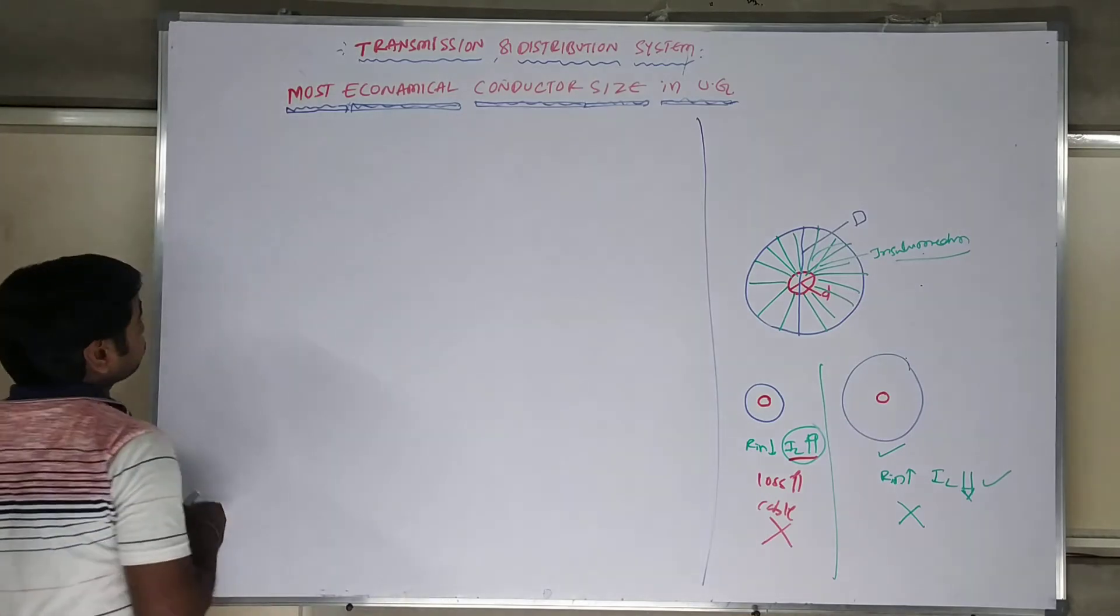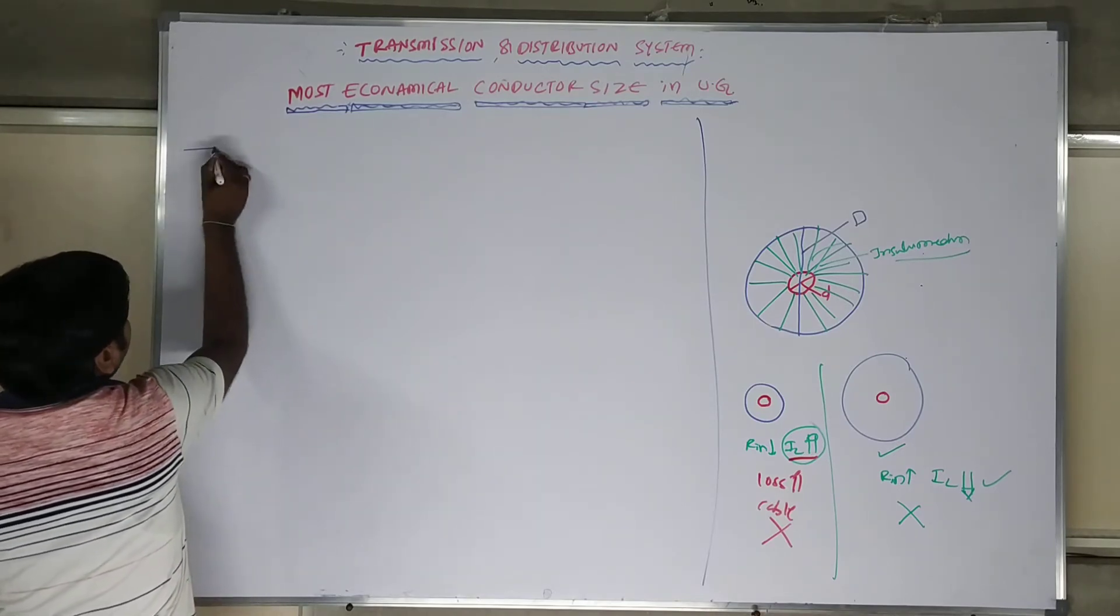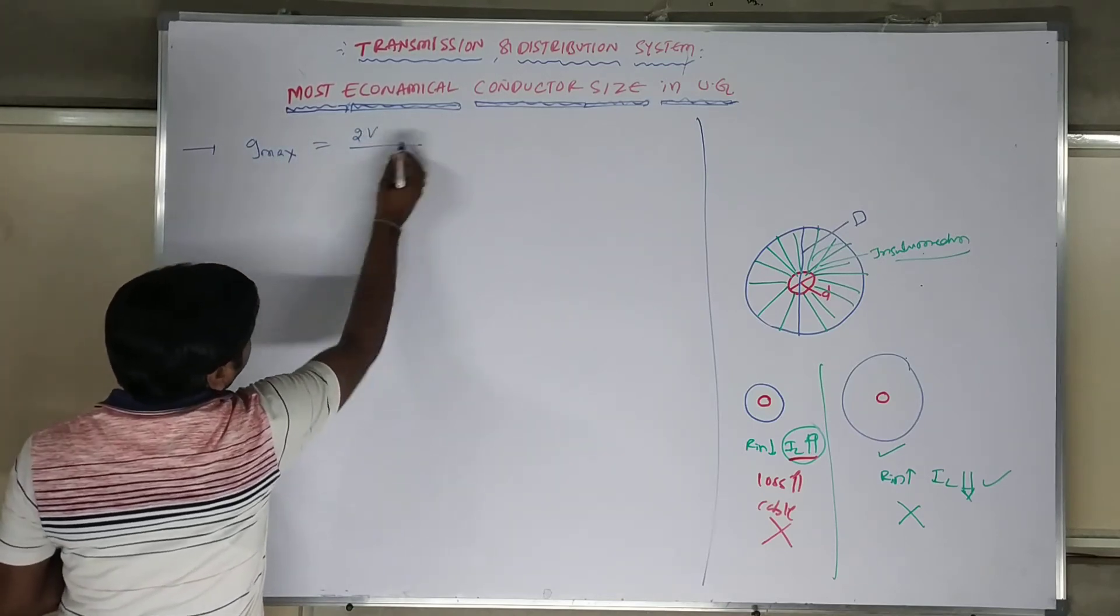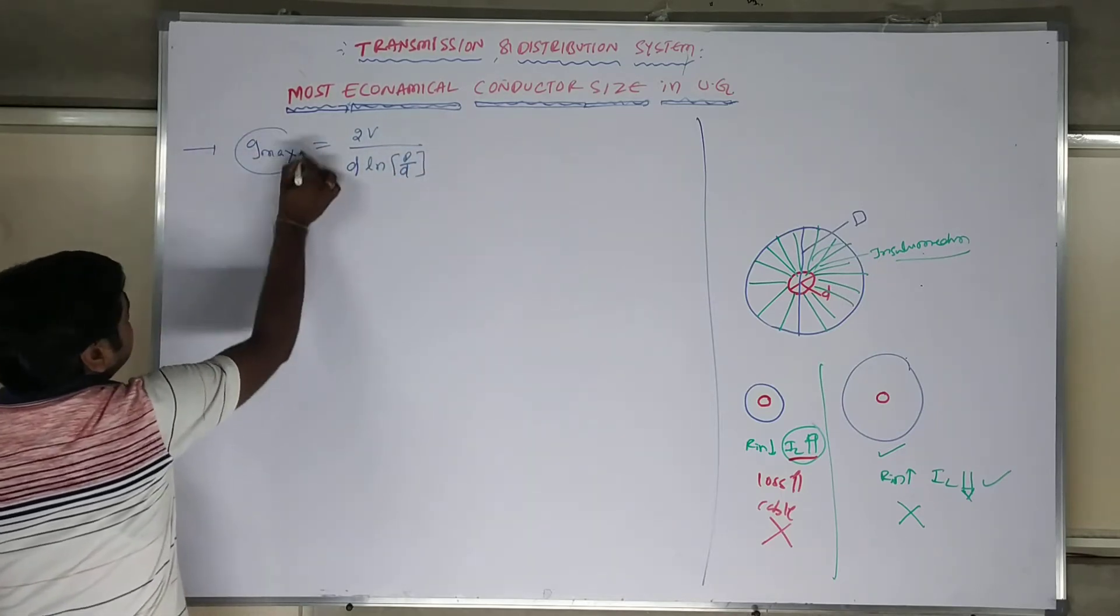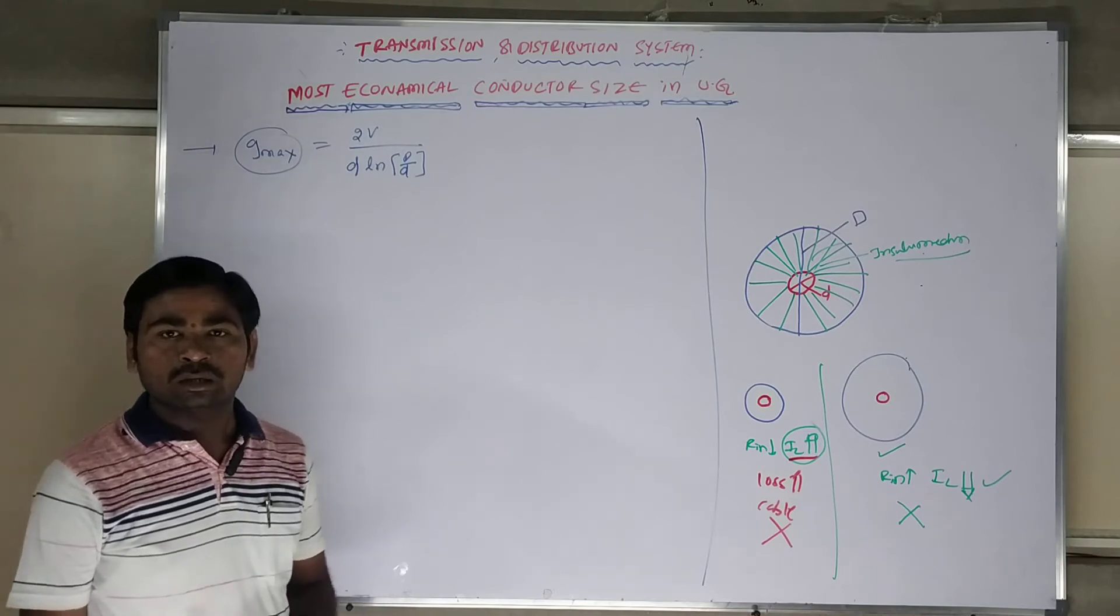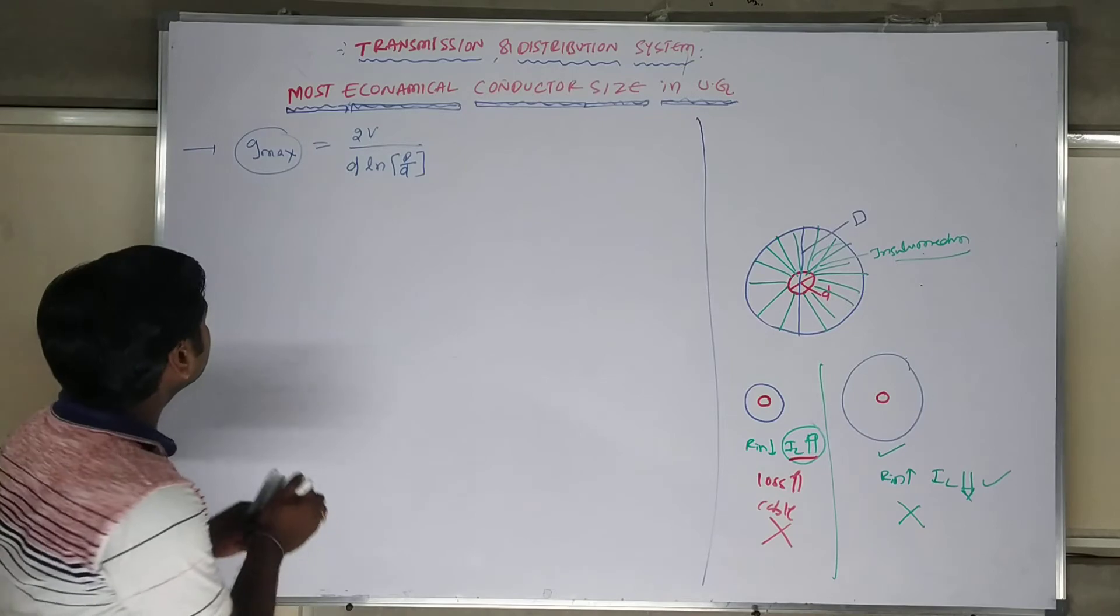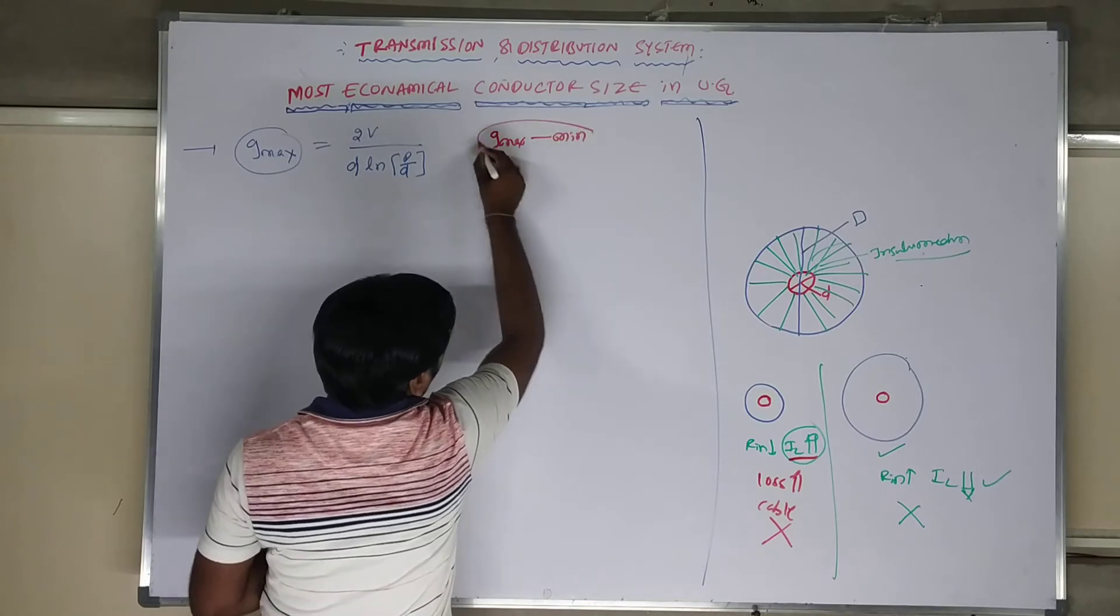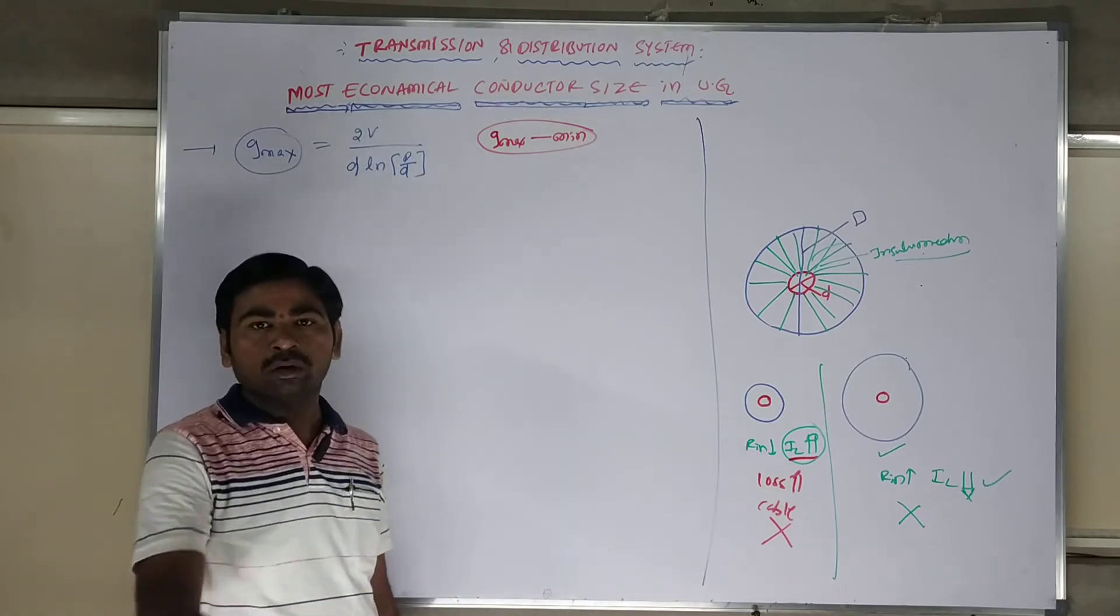So what is the most economical conductor point of view? Let us discuss. As we know that the potential gradient term, gmax, as we know, 2V is equal to d times ln D by small d. The gmax is equal to 2V by d times ln D by d. To get a most economical conductor size, the gmax value should be minimum. The gmax value should be minimum. If we maintain gmax value should be minimum, the stress of the cable is going to reduce, cost should be going to reduce.